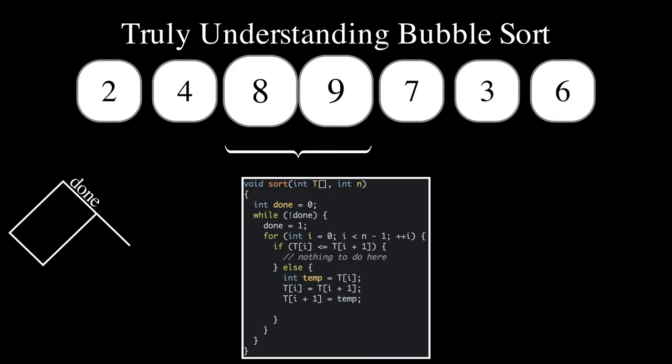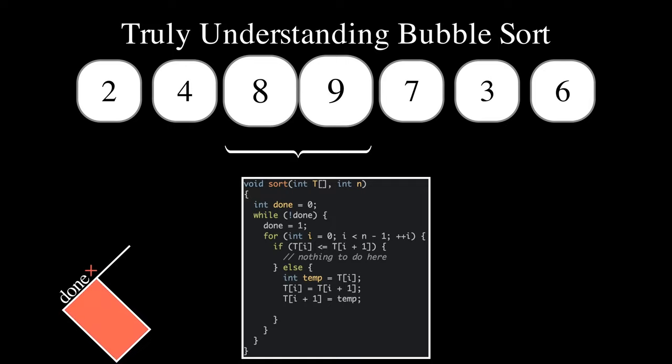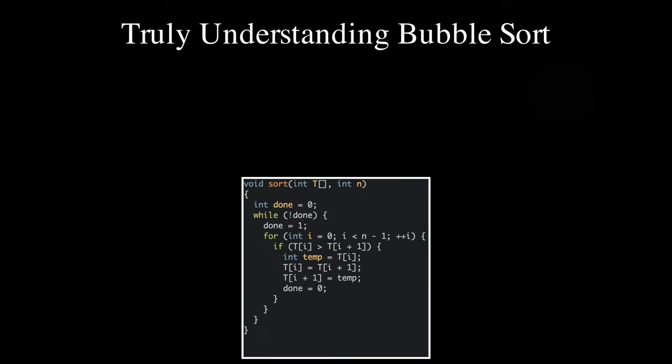As we have performed a swap, we set the flag to zero to make sure we make at least one more pass. We can slightly simplify the code above by removing the if branch altogether and keeping just the else branch, making sure to reverse the condition in the if statement.